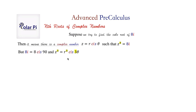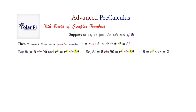So then that means we have z cubed in polar form, and we have 8i in polar form, so we can just compare the two polar forms. That is, we can write the following and equate them. From here, it follows that r³ = 8 and 3θ = 90. From r³ = 8, we get that r = 2. So for all three cube roots of 8i, this r will have to be 2.